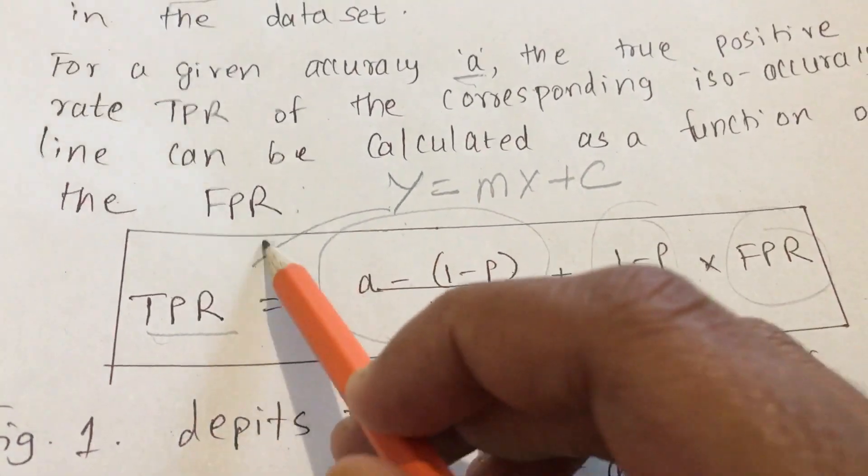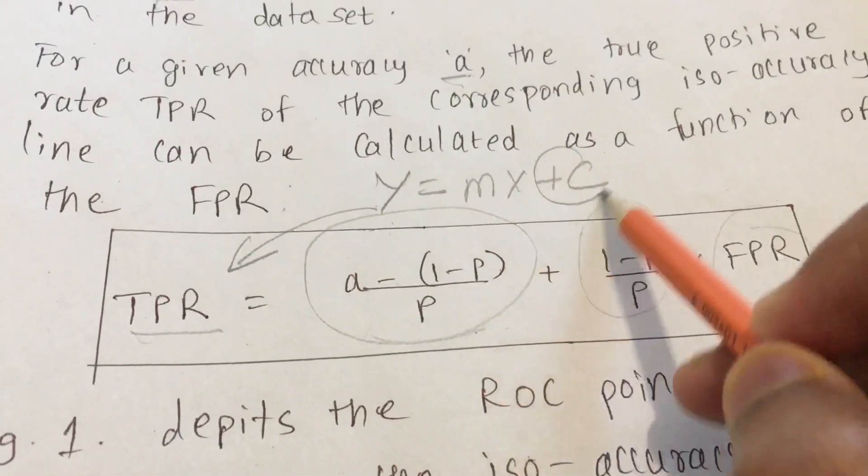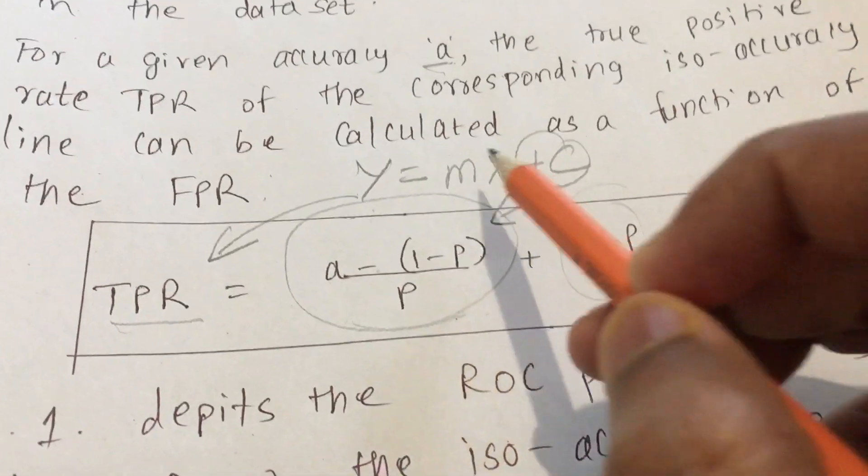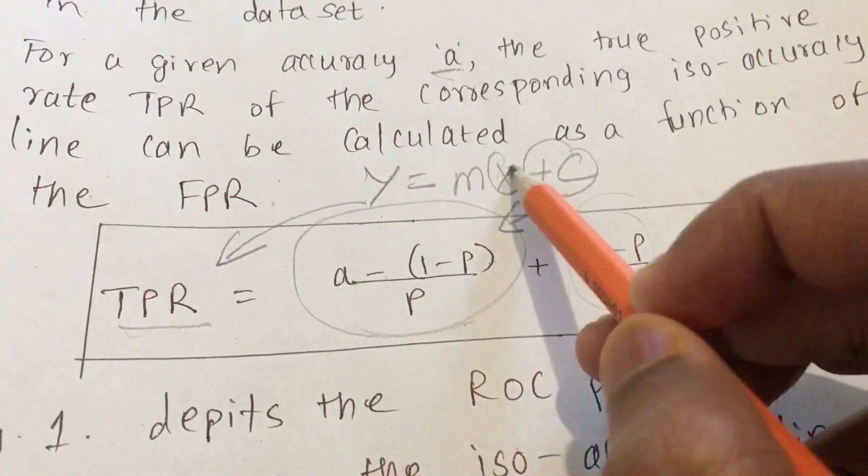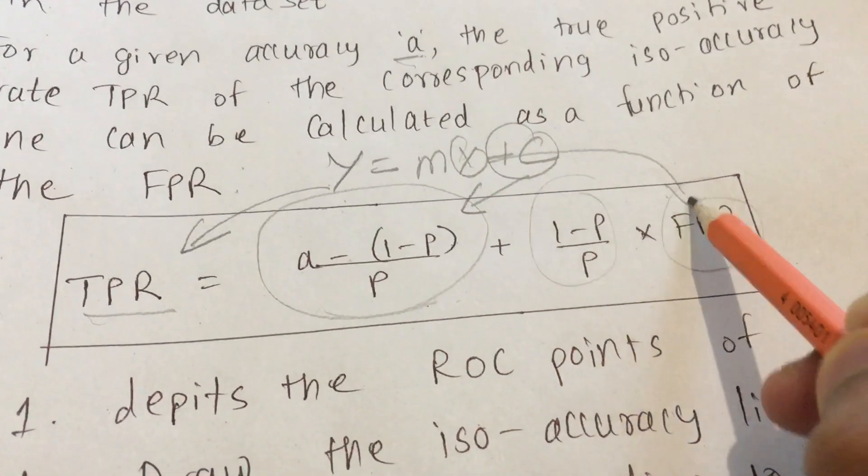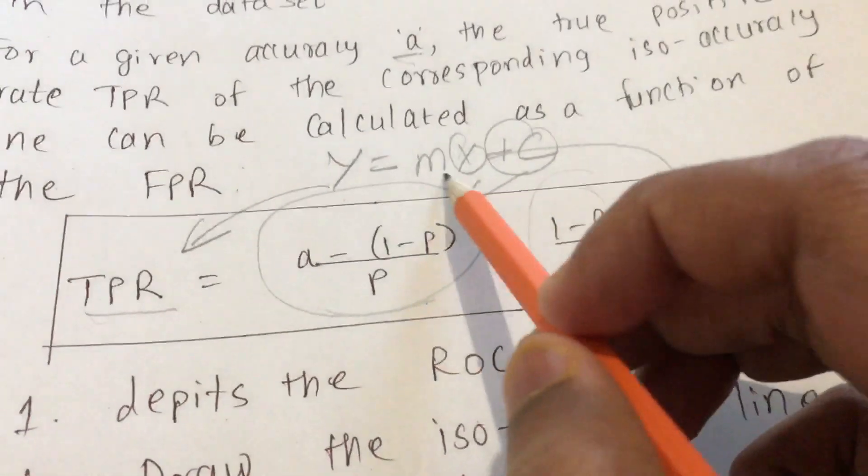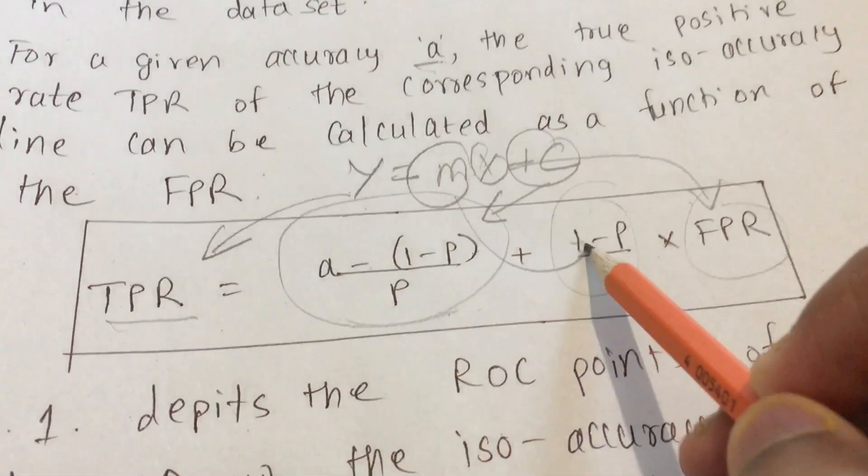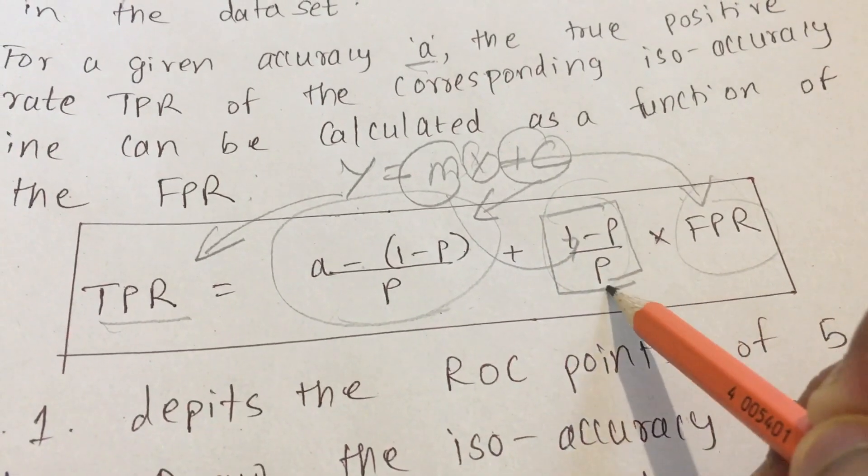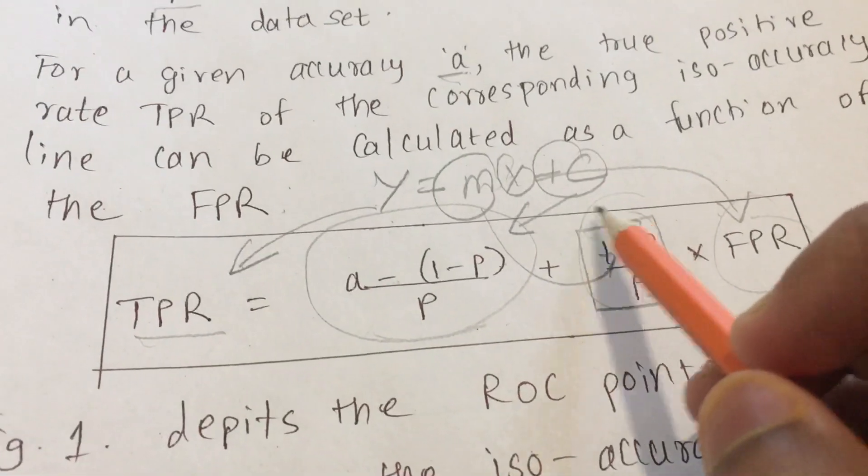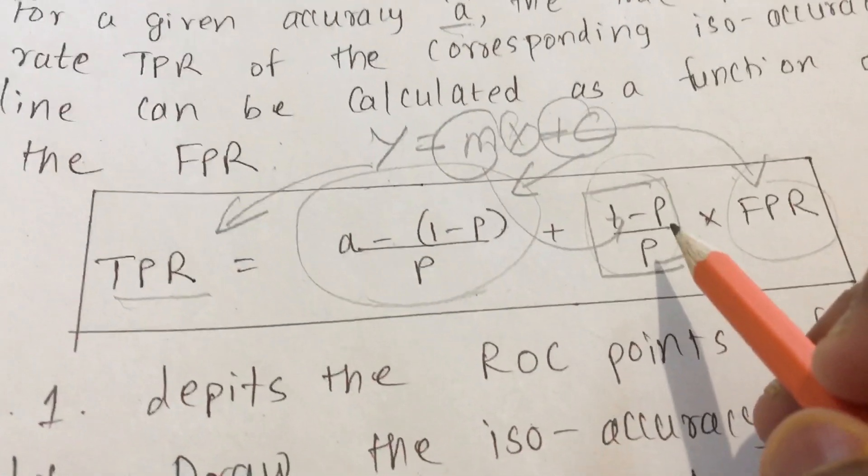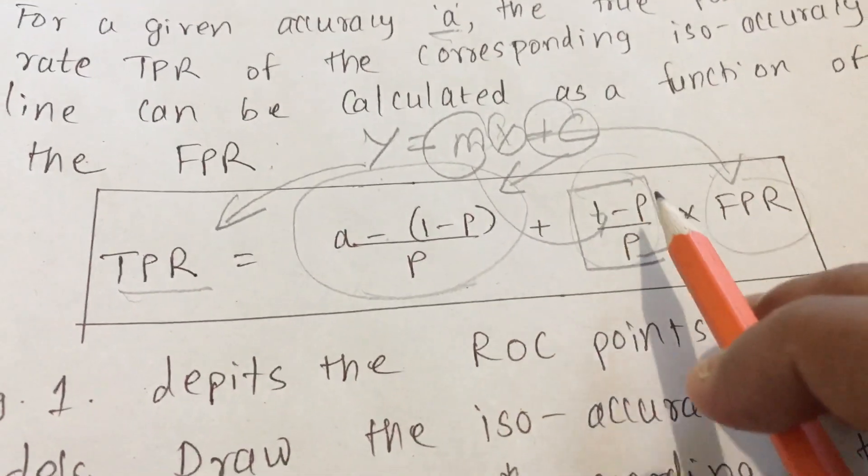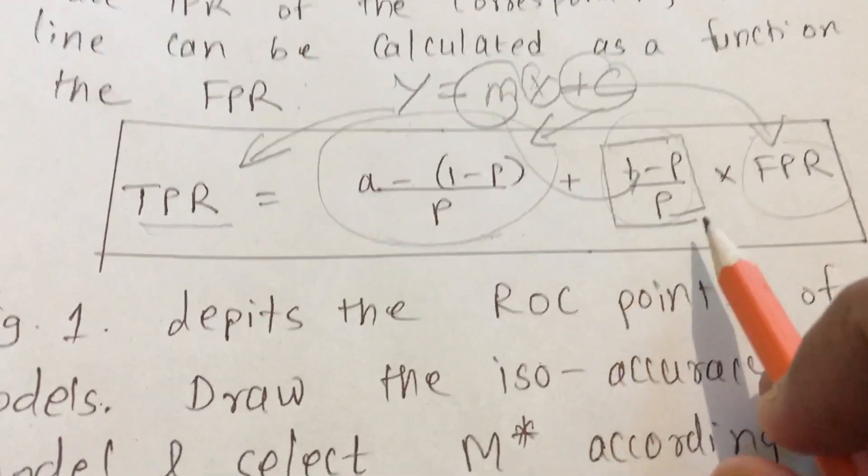Here Y can be mapped to TPR. This C, that is a constant, refers to here. Then X part remains this FPR that is on the x-axis, and this M is the slope. We are mainly interested in finding the slope of each line so that we can plot it on the graph and graphically understand which model is better.